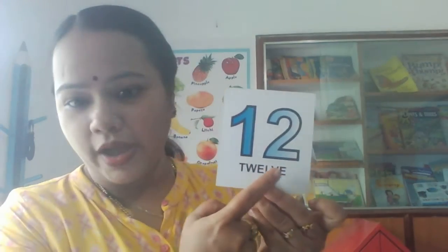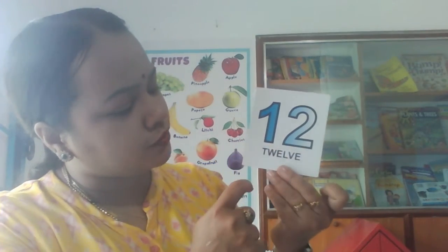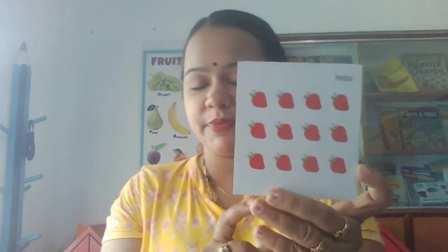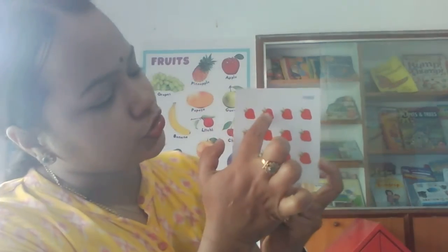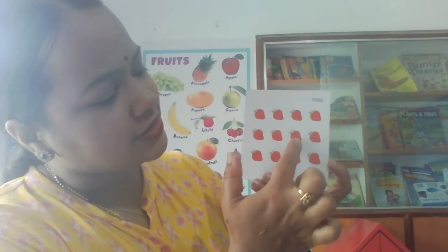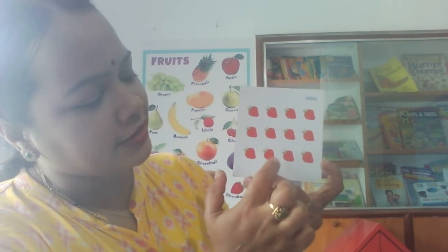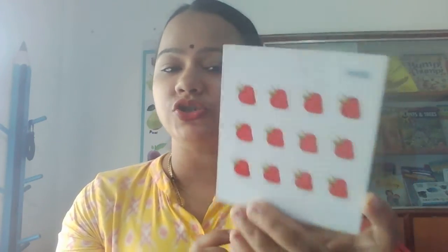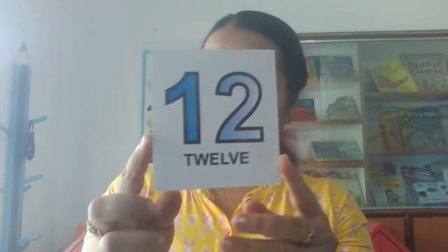After 11 the number is 12 — 1, 2, 12. Now we will count the strawberries in this picture card. 1, 2, 3, 4, 5, 6, 7, 8, 9, 10, 11, 12. How many strawberries are there? There are 12 strawberries. And the number is 12.